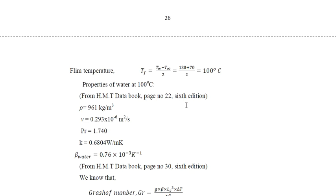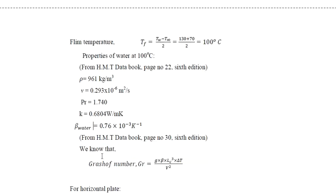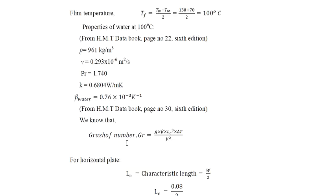Properties of water at film temperature are taken from the Kodandrama data book, page 22 (6th edition): density = 961 kg/m³, kinematic viscosity ν = 0.293 × 10⁻⁶ m²/s, Prandtl number = 1.74, thermal conductivity k = 0.6804 W/m·K. For beta, from page 30 of the data book, beta = 1/T_f(K) = 1/(100 + 273) = 1/373, which gives beta = 0.76 × 10⁻³ K⁻¹.